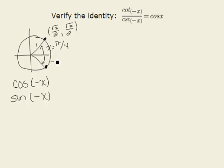Rotating through -π/4, we now have the coordinate point in quadrant 4. In quadrant 4, our x-coordinate is positive and our y-coordinate is negative.